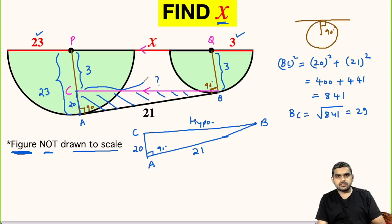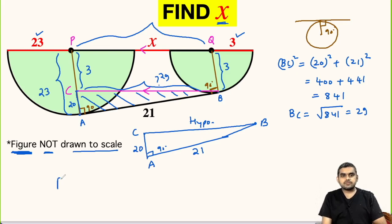So we found this distance as 29 units. And this distance will also be equal to PQ by symmetry. And what is PQ? PQ we found equal to BC is equal to 29.